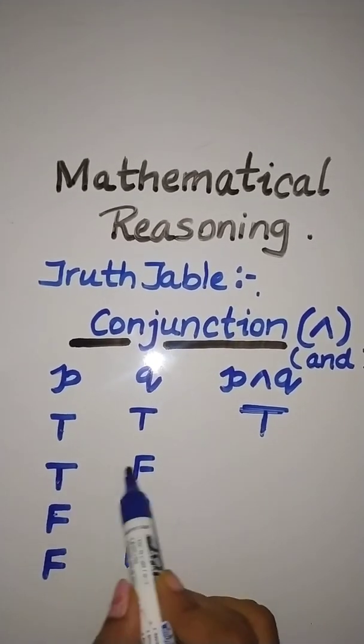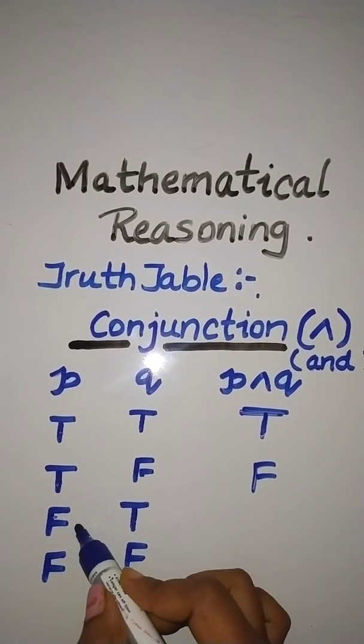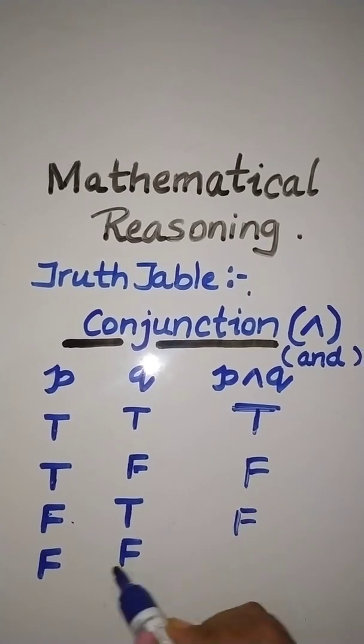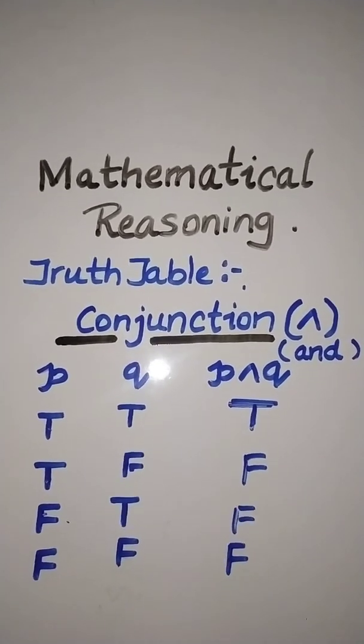So here one is true and one is false, hence it is false. Here one is true and one is false, hence it is false. And here both are false, so again it is false. So this is the concept.